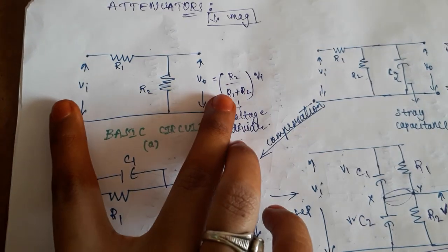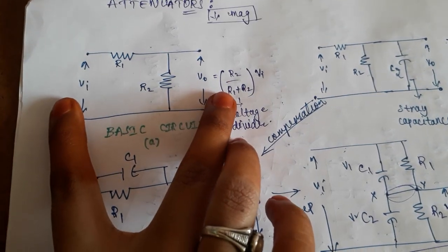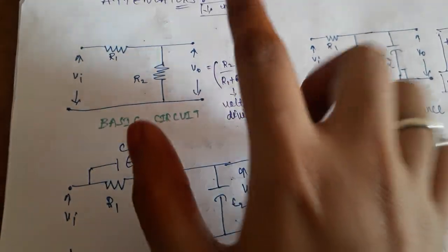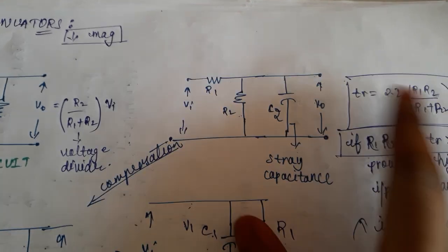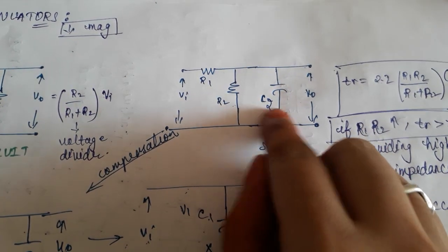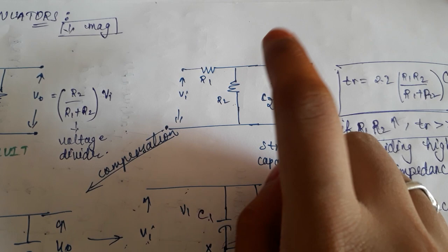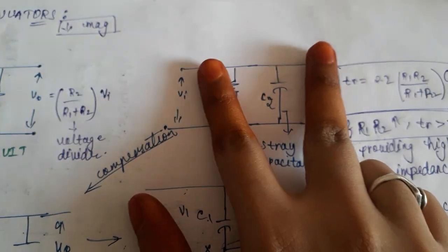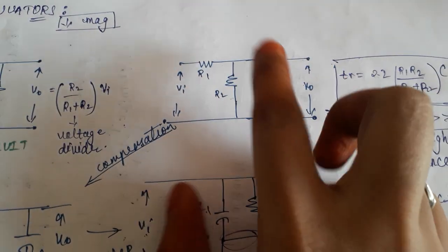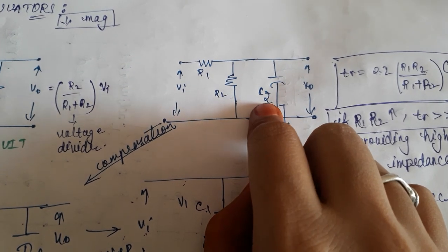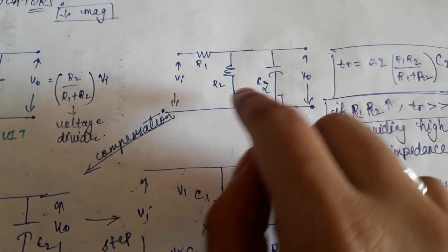This is the basic circuit of an attenuator, but when this becomes input to the amplification stage, stray capacitance comes into existence — this is the inter-stage capacitance that arises when two subsystems are combined. This capacitance is known as stray capacitance.